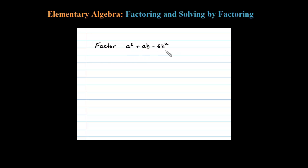To factor this trinomial, the leading coefficient is 1, so we're looking for the factors of 6 that add up to 1. Now 6 breaks up as 1 times 6 or 2 times 3, so we're going to use 2 times 3. Let's go ahead and get started.